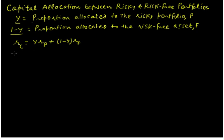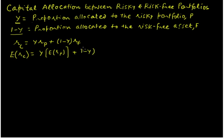Let us express this equation now in terms of expected return. If we introduce the expectations operator, we can say that the expected return on the complete portfolio is going to be Y times the expected return on the risky portfolio, plus 1-Y times the return on the risk-free asset. There is no expectation involved with the risk-free asset.